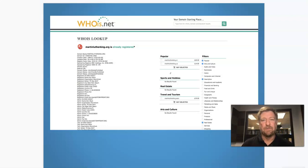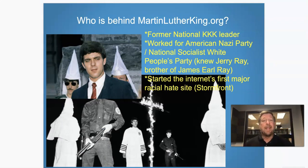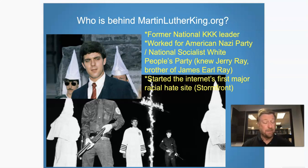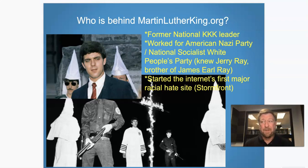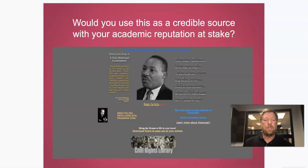When you copy and paste martinlutherking.org into whois.net, you get some results back. What we found was martinlutherking.org is run by a man named Don Black, Organization of Stormfront in Palm Beach, Florida. A simple Google search will tell you that Mr. Black is the former head of the KKK. He worked for the American Nazi Party and Socialist White People's Party. He hung out with Jerry Ray, who is the brother of James Earl Ray — who assassinated Martin Luther King on April 4th, 1968.